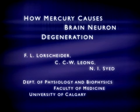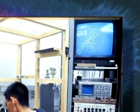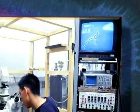How Mercury Causes Brain Neuron Degeneration. Mercury has long been known to be a potent neurotoxic substance, whether it is inhaled or consumed in the diet as a food contaminant.